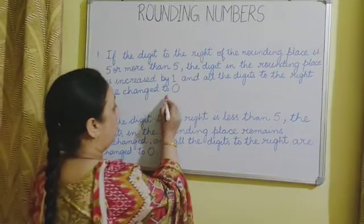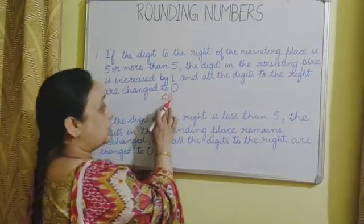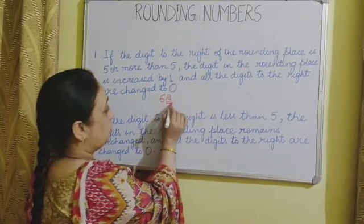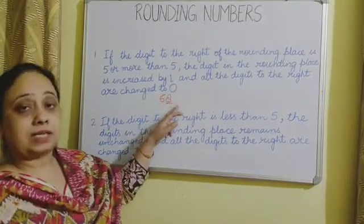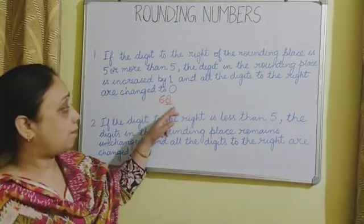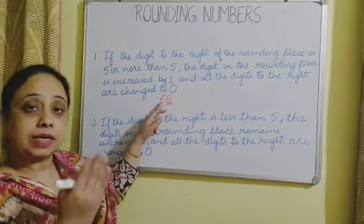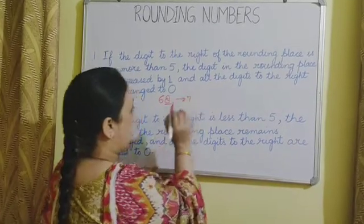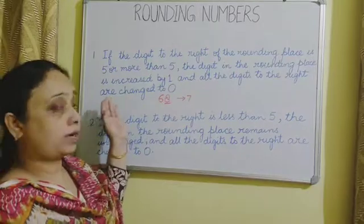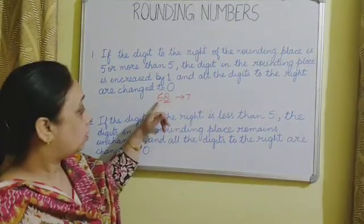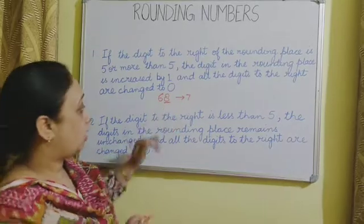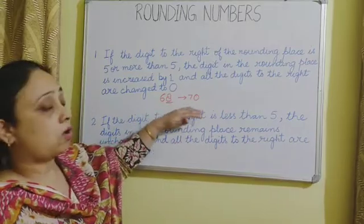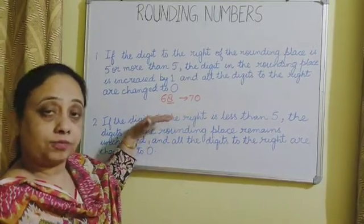Suppose we have to round off 68 to nearest 10. We look at the right — that is the 1's place. The digit is more than 5, so the value of 6 will increase by 1. That is, 6 will change to 7. And all the digits to the right are changed to 0. The digit to the right is 8, so 8 will be changed to 0. Therefore, 68 is rounded off to 70 when rounded to nearest 10.